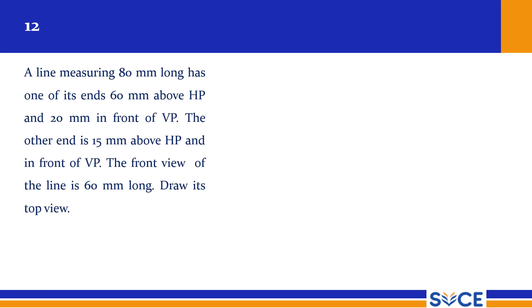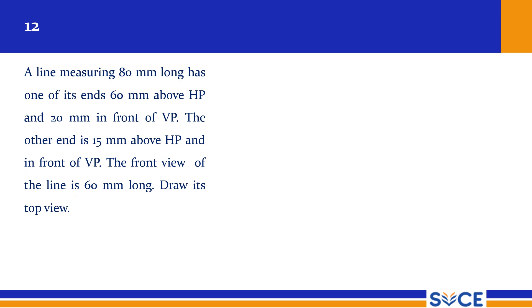So this is the problem statement: a line measuring 80mm long — so true length is given — as one of its ends 60mm above HP and 20mm in front of VP. The other end is 15mm above HP and in front of VP. The distance in front of VP is not known — only the above HP distance is given. But the front view of the line, A dash B dash, is 60mm long. Draw its top view. There are no specific notations mentioned here, so we can use our own notations.